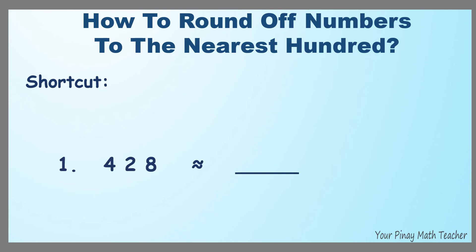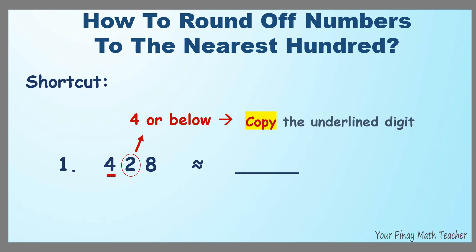There is also a shortcut when rounding off to the nearest hundred. For example, 428. Underline the hundreds digit and look at the digit to its right. If it is 4 or below, copy the underlined digit. The encircled digit is 2, so we copy 4 and make 2 and 8 zeros. So 428 is rounded off to 400.